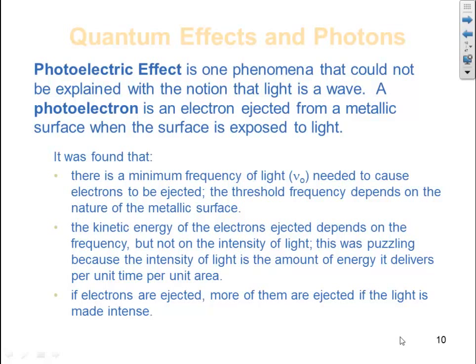The kinetic energy of the electrons ejected depends on the frequency, but not the intensity of light. This was puzzling because the intensity of light is the amount of energy it delivers per unit time per unit area. If electrons are ejected, more of them are ejected if the light is made intense.